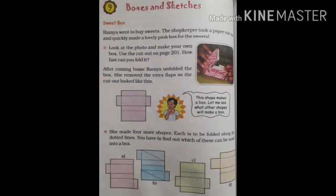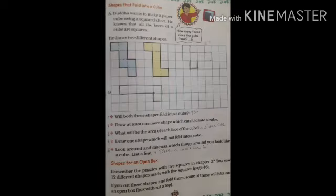From these four steps we can say that from options A and C we can make boxes. A and C will be able to make boxes, but B and D will not be able to make boxes, because in B the dotted lines are in a cross pattern, so it won't make a box this way. D also has a different pattern.